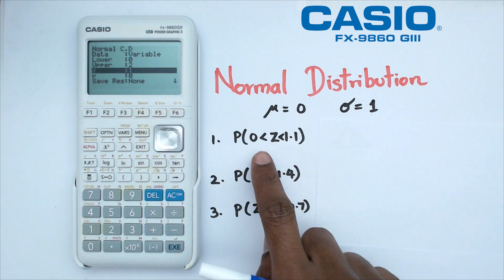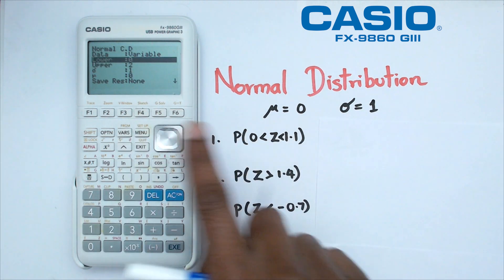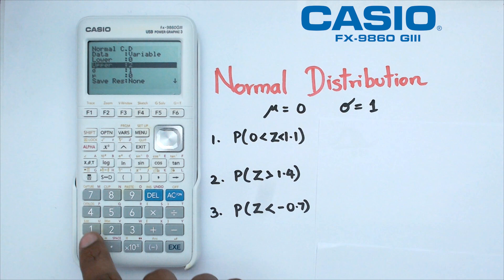Now for the first question, we've got between zero and 1.1. So our lower limit is going to be zero, that's already done there and our upper limit is going to be 1.01.